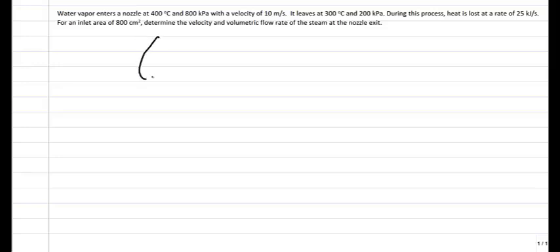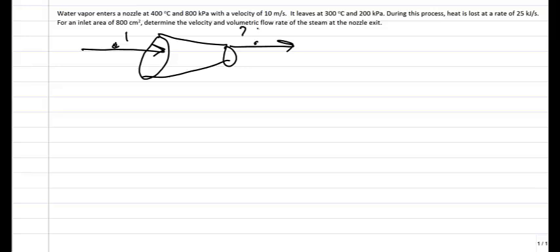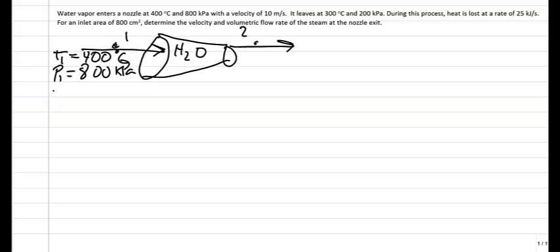We begin this problem with the appropriate illustration. We have a nozzle, so we begin with a diagram of a nozzle, indicating state point 1 as the inlet and state point 2 as the exit. It is water, so let's put H2O on the diagram. The inlet temperature T1 is 400 degrees Celsius, the inlet pressure P1 is 800 kilopascal, and the inlet velocity V1 is 10 meters per second.